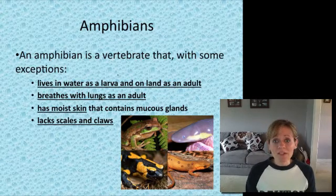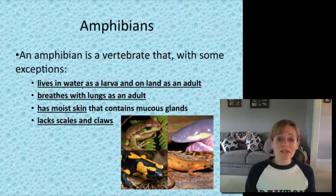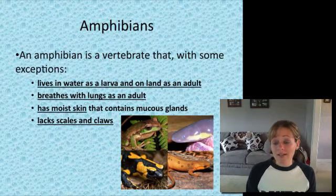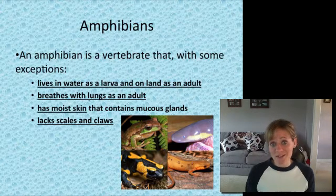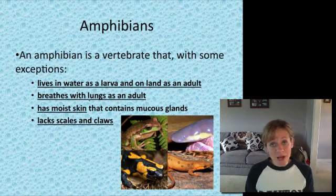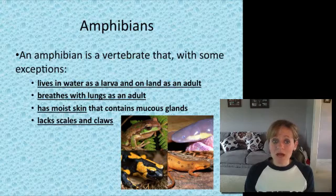An amphibian is a vertebrate that, with some exceptions, lives in water as a larva and on land as an adult. We'll talk about metamorphosis. They breathe with lungs as an adult — a new adaptation. They have moist skin, which they also use for respiration, and they do not have scales and claws.